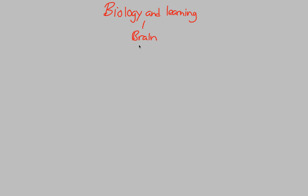To begin our journey, we're going to talk about the brain. There are five main components that we want to talk about in terms of the brain and its relationship to biology and learning. We'll go through these each step by step, and this will be our first flowchart covering the brain.